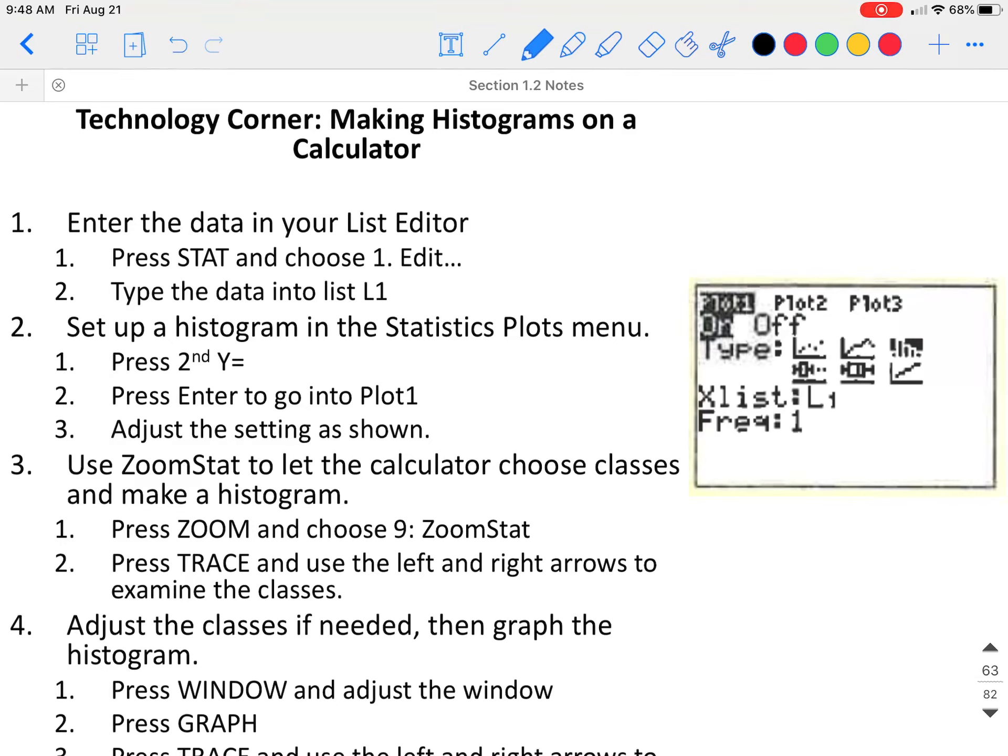You can make histograms on a graphing calculator. If you have a TI-83 or an 84, to do this, you would enter the data into your list editor. You would press the stat button. You would choose option one, which says edit. And when it pops up to list one, you would type all your data values into list one.